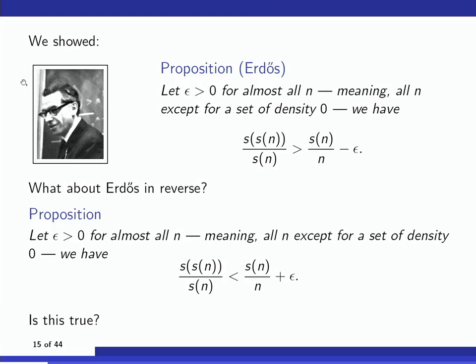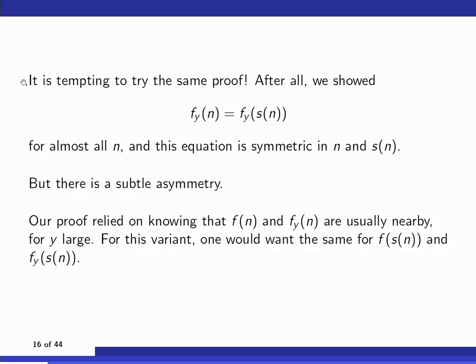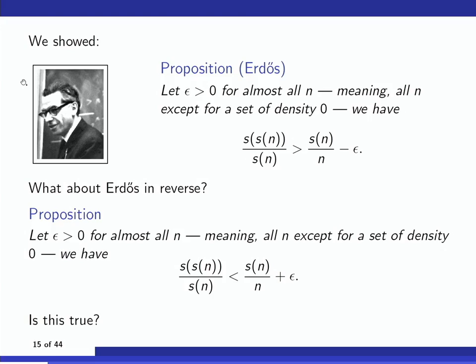You might think we've already done it, because our proof showed both that F(n) is usually close to F_y(n), and that n and s(n) almost always have the same set of small divisors — both statements look symmetric in n and s(n). So it seems like you ought to be able to just turn the argument around. But there's a subtle asymmetry: one of them has an s around it.